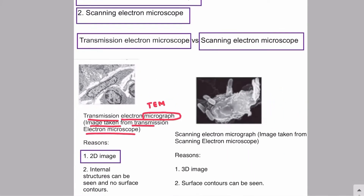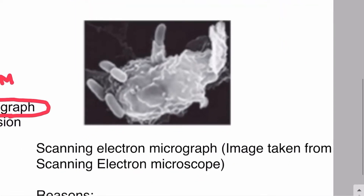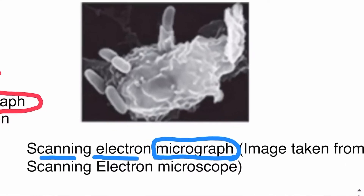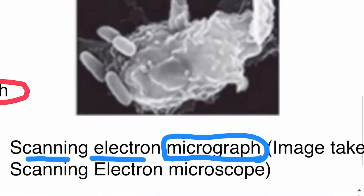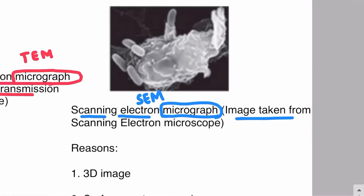With TEM, you will not look at surface contours or surface details of the cell or any tissue. On the other hand, with the scanning electron microscope, the image taken from it is called a scanning electron micrograph or SEM. As mentioned, the term 'micrograph' is used for the image, so an SEM is a picture taken from the scanning electron microscope.